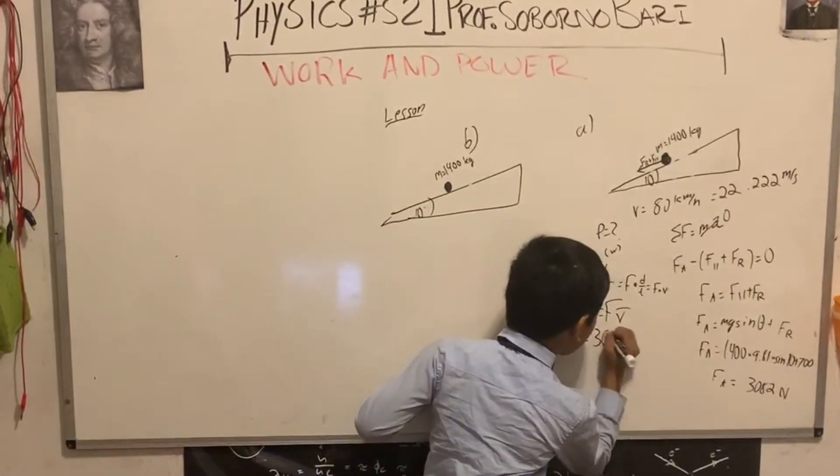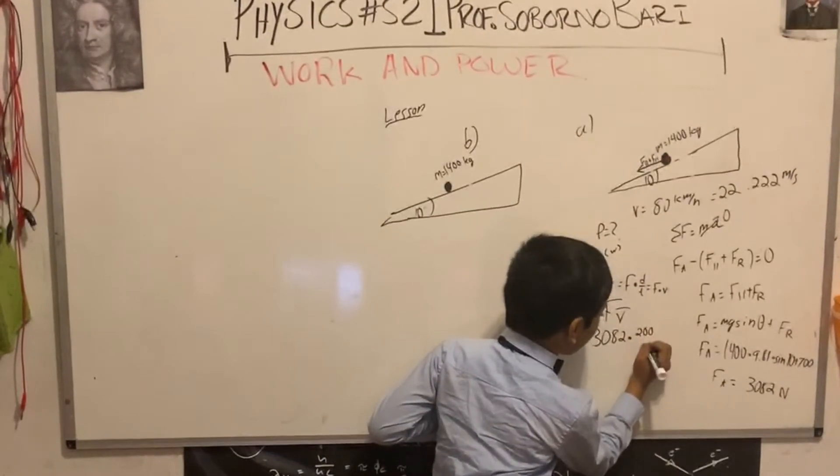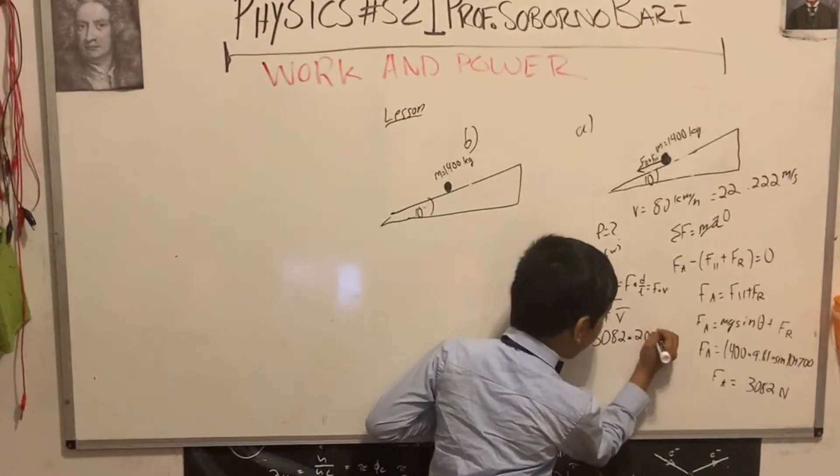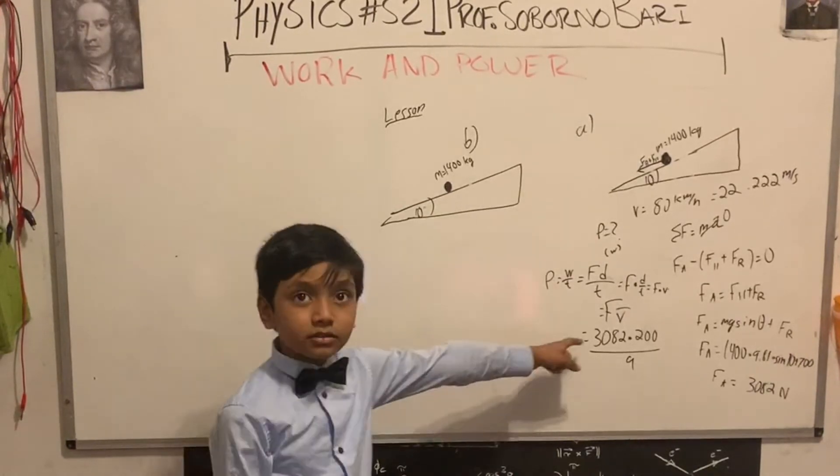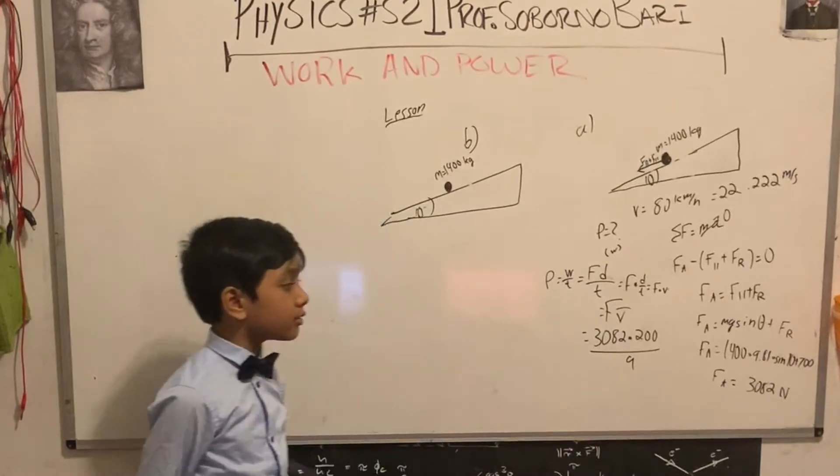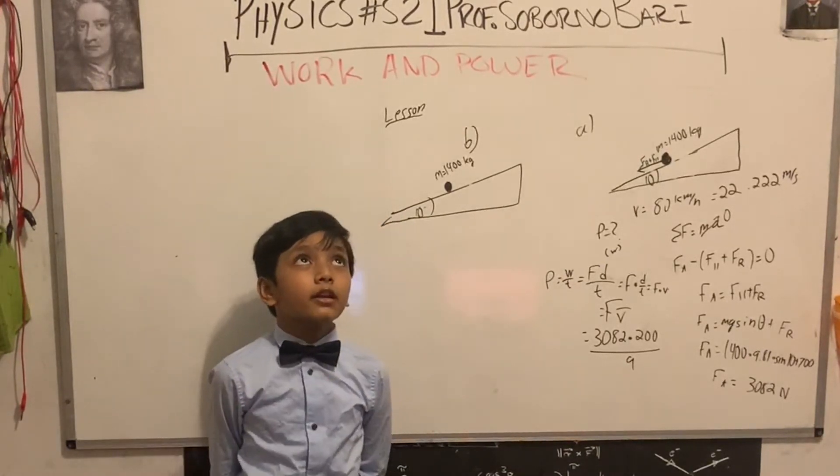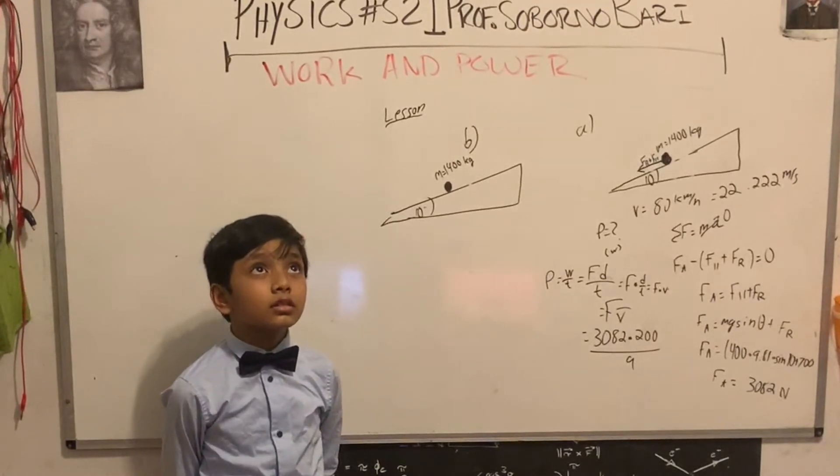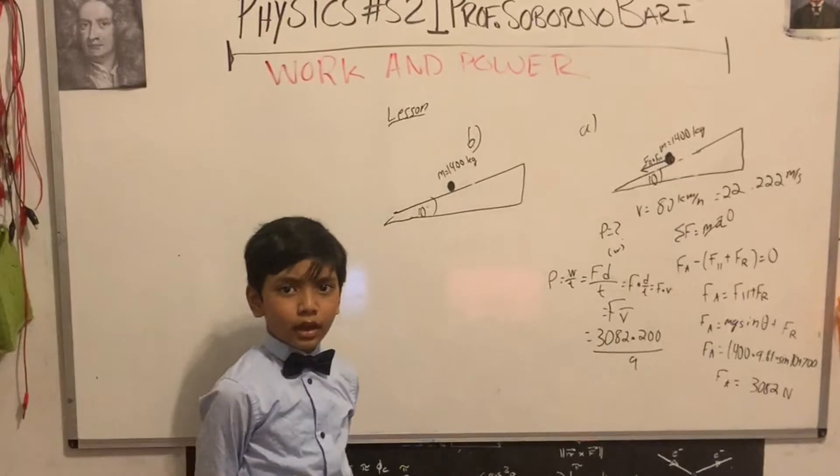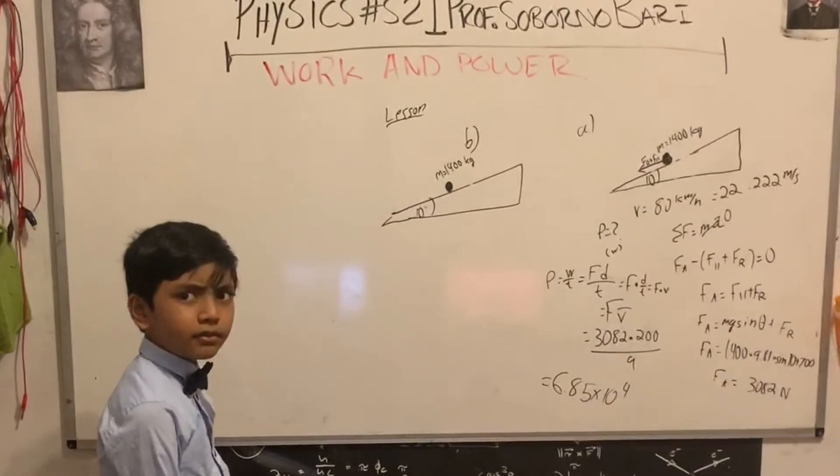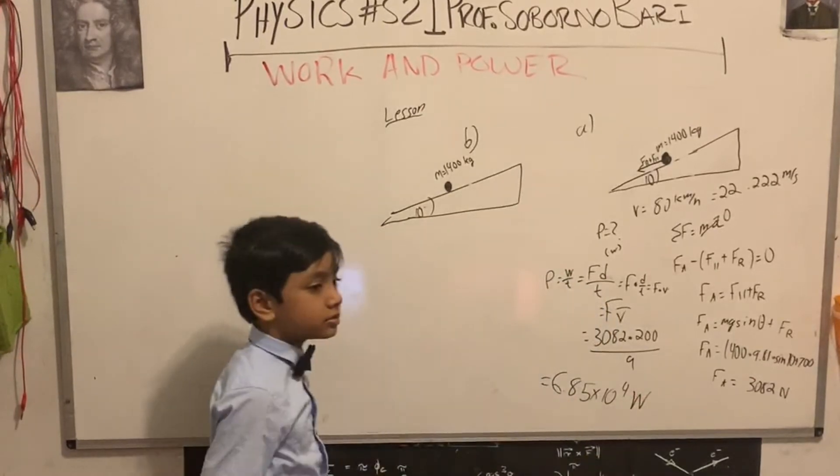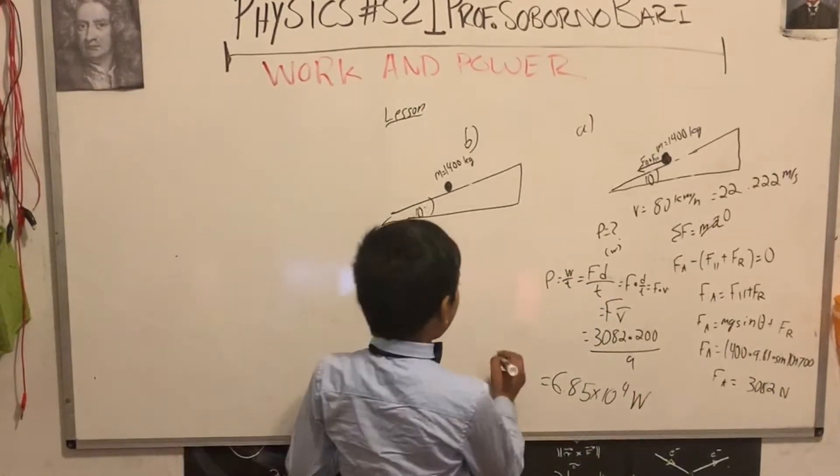F is 3082 and v is 200 over 9. So I have to do 3082 times 200 over 9. That is 68,498. So we got 6.8498, which is going to be about 6.85 times 10 to the 4. That brings to the 4, I believe.